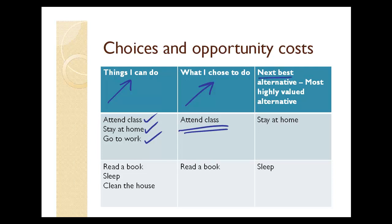My next best alternative — in other words, what I would have done if I hadn't chosen to attend class, sort of what was second on my list — is stay at home. So staying at home is what I have forfeited by choosing to attend class.